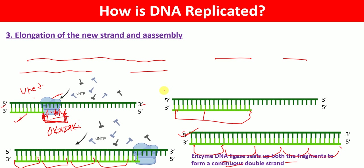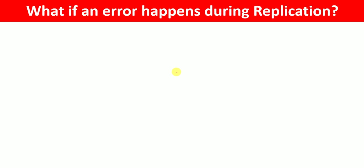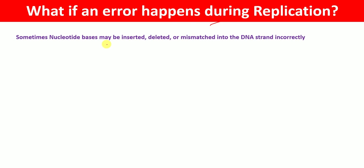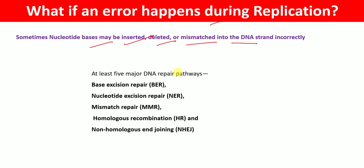This completes the elongation of the new strand and the assembly of the new DNA molecule. From one original DNA molecule we now have two new identical DNA molecules. If an error occurs during replication — such as nucleotide bases being inserted, deleted, or mismatched — the error is repaired through the DNA repair process. There are at least five different pathways involved: base excision repair, nucleotide excision repair, mismatch repair, homologous recombination, and non-homologous end joining.